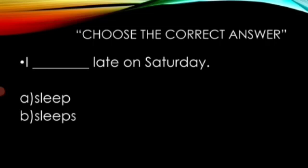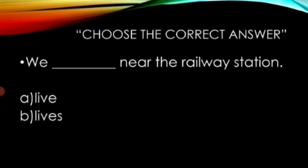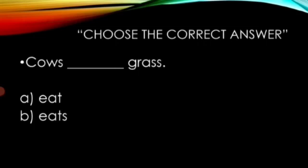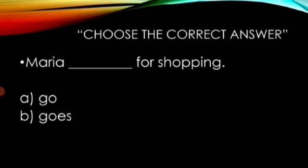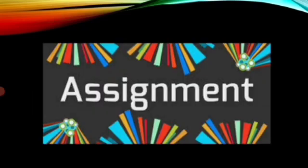Now look at the word 'I'. I don't like 's', so what will come here? Sleep. I sleep late on Saturday. She dash her children so much — she loves her children so much. We dash near the railway station — we also don't like 's', so we live near the railway station. Cows dash grass — cows eat grass. Maria dash for shopping — Maria goes for shopping. Children dash early at night — children sleep early at night.